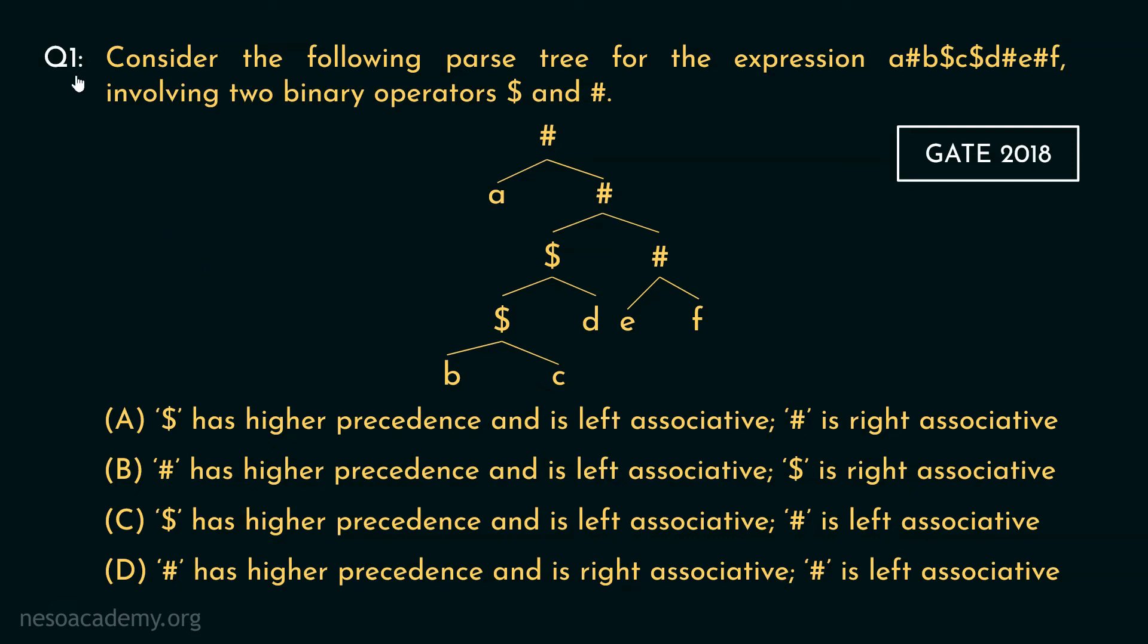Observe the first question. Consider the following parse tree for the expression a hash b dollar c dollar d hash e hash f involving two binary operators dollar and hash. So this is the parse tree and these are the options given.